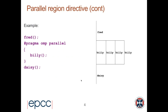Here's a simple example: the master thread executes the function 'fred' to begin with, because that's outside a parallel region. Then there's a parallel region whose body contains a call to the function 'billy'. With four threads total — the master plus three new ones — they all execute 'billy'. At the end of the parallel region, the master thread waits for all the other threads to hit the end of the parallel region, then carries on on its own again and executes function 'daisy'.